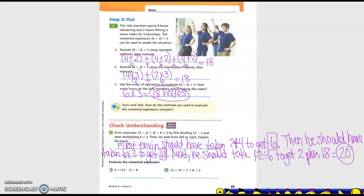Evaluate the numerical expression. 4 times 15 minus 7 plus 8. So 15 minus 7 is what? So we do that first, right? Because the order of operations. So what is that? 8, right? So then I'm going to do 4 times 8, right? Which equals 32. And then plus 8, which equals 40.